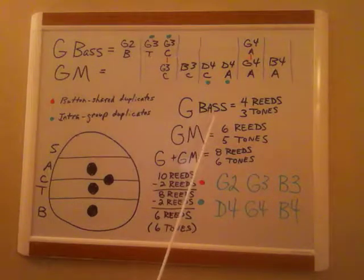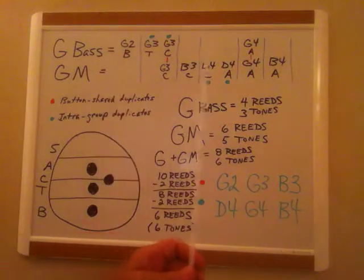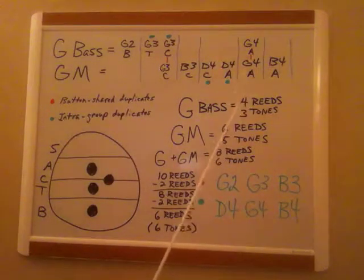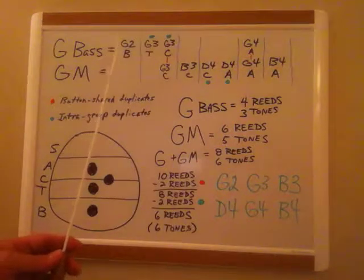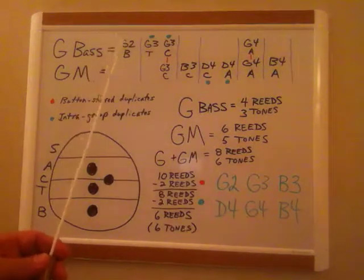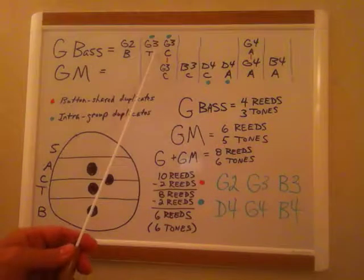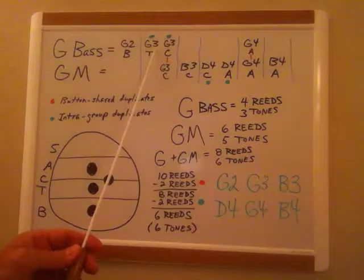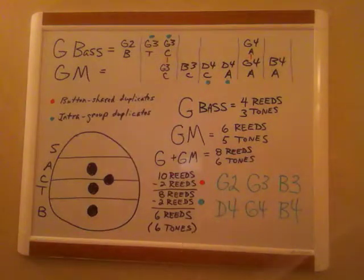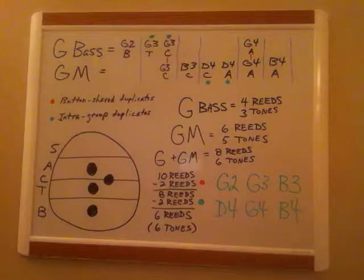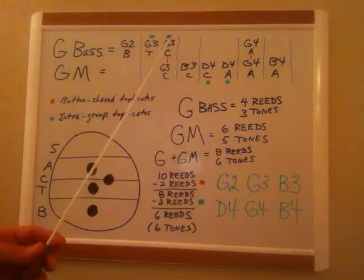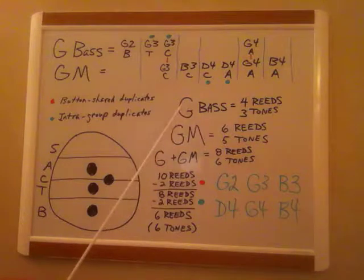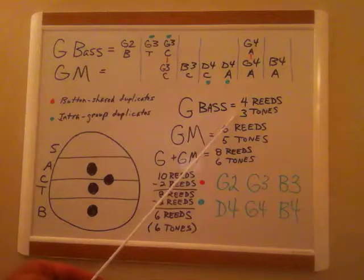Well, let's go back and look at this. When you play the G bass button, you know from above, all right, that four reeds are employed, but you're only going to hear three tones ordinarily. Why? Because you see up here on the G bass selection that the G3 tone in the tenor reed set and the G3 tone in the contralto reed set are sounding at the same time. Now, unless you have super hearing like Superman, you're likely not going to be able to distinguish between the two. I can't tell and I have excellent hearing.